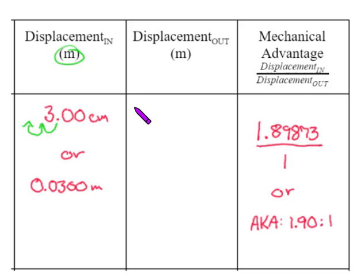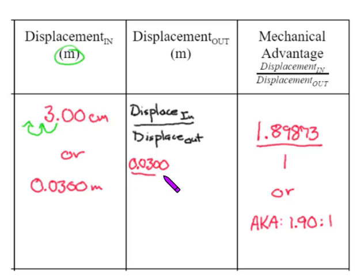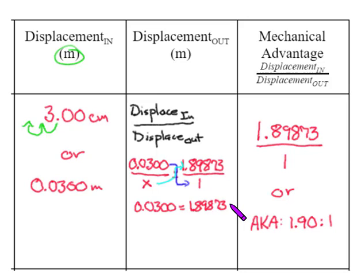So, I am going to use the equation displacement in over displacement out. Now that I do that, I can start making some ratios. I know my displacement in is 0.0300 over x, but I can make that equal to 1.89873 over 1, at which point I can cross multiply, giving me 0.0300 equals 1.89873 times x.